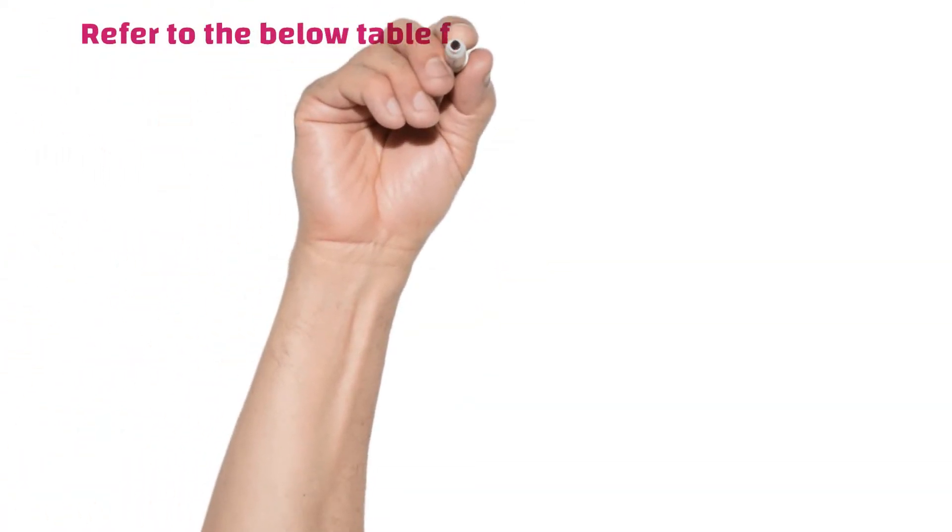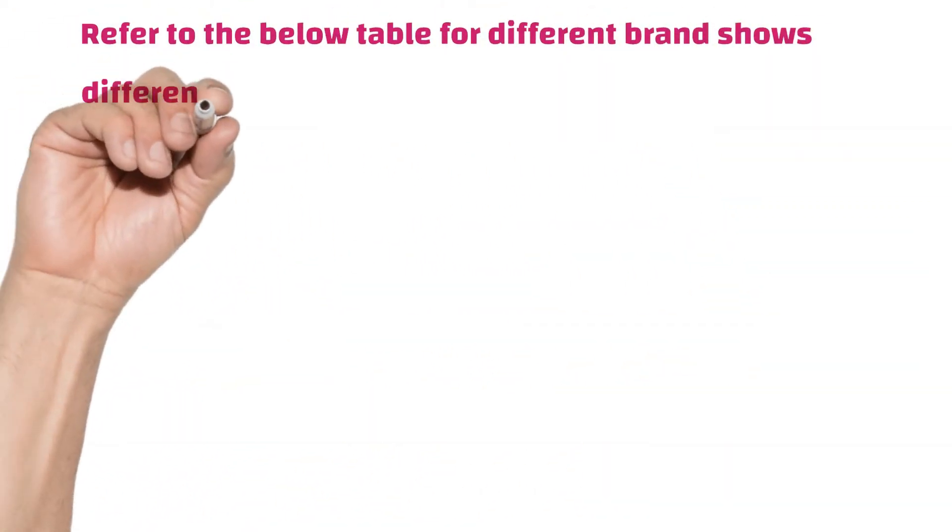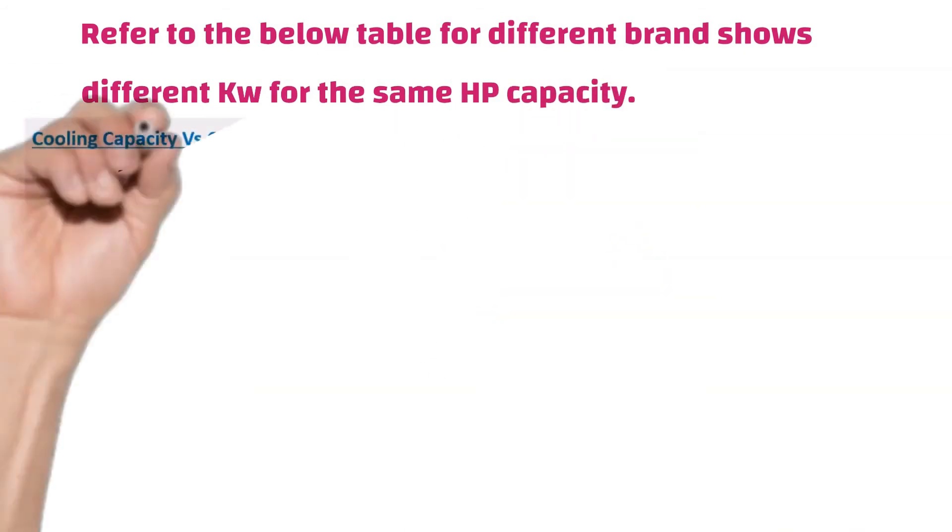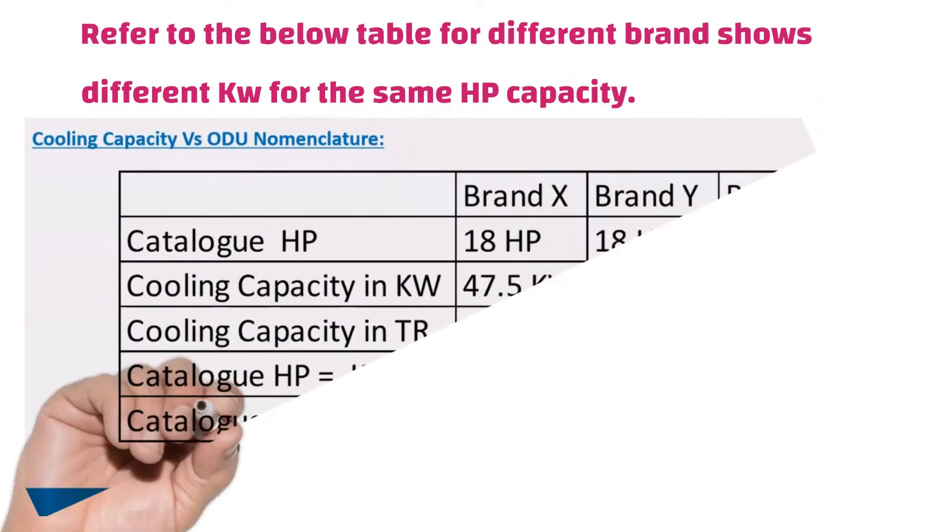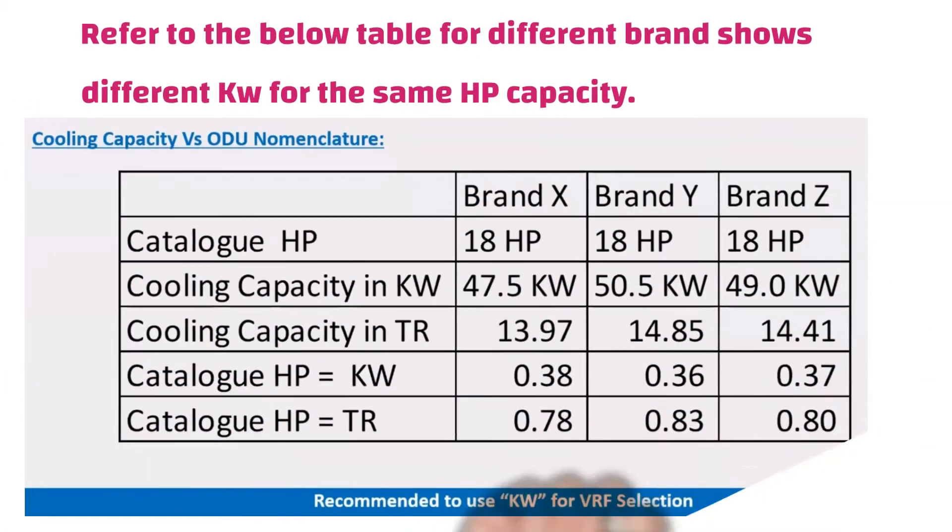Refer to the below table, for different brand shows different kilowatts for the same horsepower capacity. Brand X showing here 47.5 kilowatts, brand D showing here 50.5 kilowatts, and brand Z showing here 49.0 kilowatts.